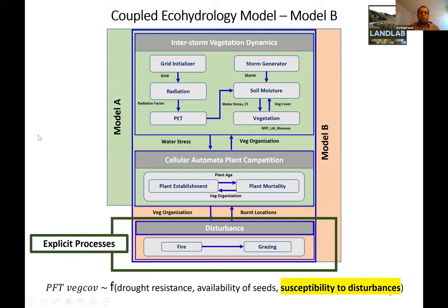We upgraded our model with another component that could explicitly process fires and grazing. Fires simulate lightning igniting plant cells depending on their susceptibility, and fire spreads to vegetated neighbors based on individual plant vulnerabilities. Grazing removes random grass cells, and it can be upgraded further to introduce grazing trends.